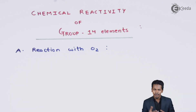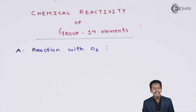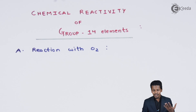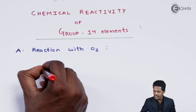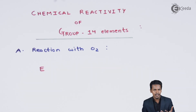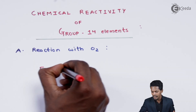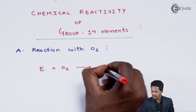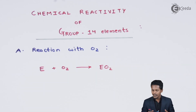This is applicable to all elements in Group 14. For example, whenever lead reacts with oxygen it forms PbO, that is lead monoxide. In general, if we consider E as a Group 14 element and react it with oxygen, we get the respective oxide.